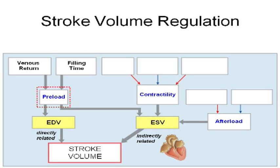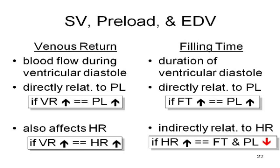Preload is basically how much the ventricles are stretched. How do you stretch the atria? You stretch the right atrium by putting more blood into it. You do this by controlling venous return — how much blood is going back to the heart — as well as filling time, which is the time it takes for blood to go into the ventricles. If venous return goes up, preload goes up. More blood is going back to the right side of the heart and stretching the wall of the right atrium.